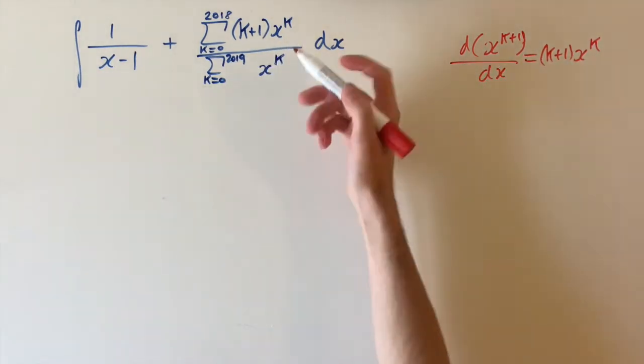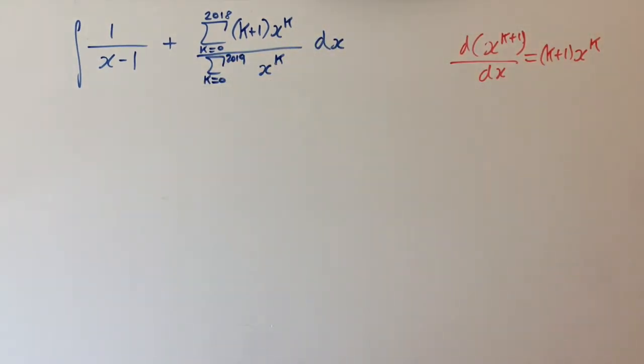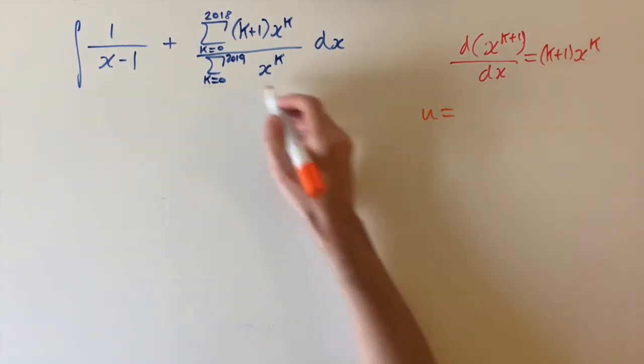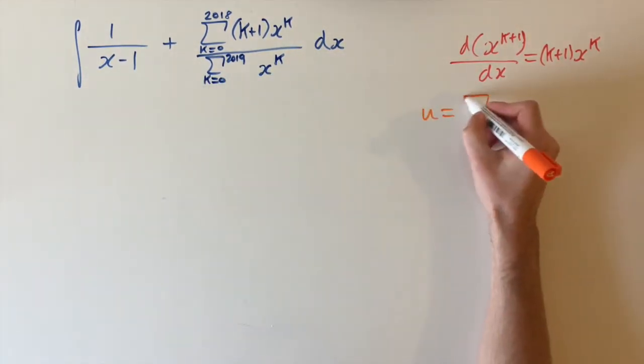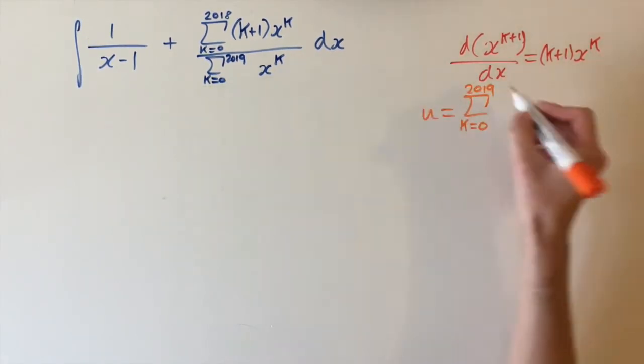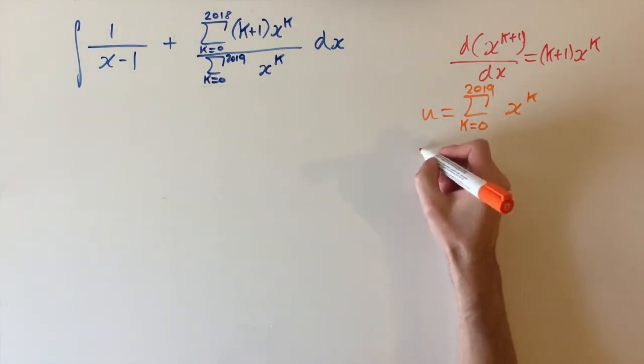So we're going to try and show that the numerator is exactly the derivative of the denominator. And if we can do that, we can use a substitution. So let's let u be the whole denominator. So u is the sum from k equals 0 up to 2019 of x to the k. And let's see what happens when we differentiate this.